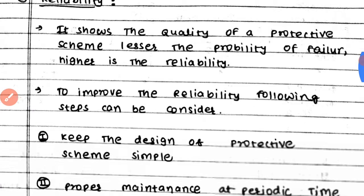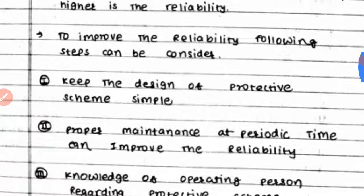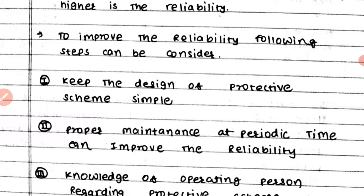There are safe operations with high reliability. To improve the reliability of a protective scheme, consider these steps: First, keep the design of the protective scheme as simple as possible — a simple design means simpler operation, completed in less time, giving higher reliability. Second, proper maintenance at periodic intervals can improve reliability, since low maintenance increases chances of equipment damage.